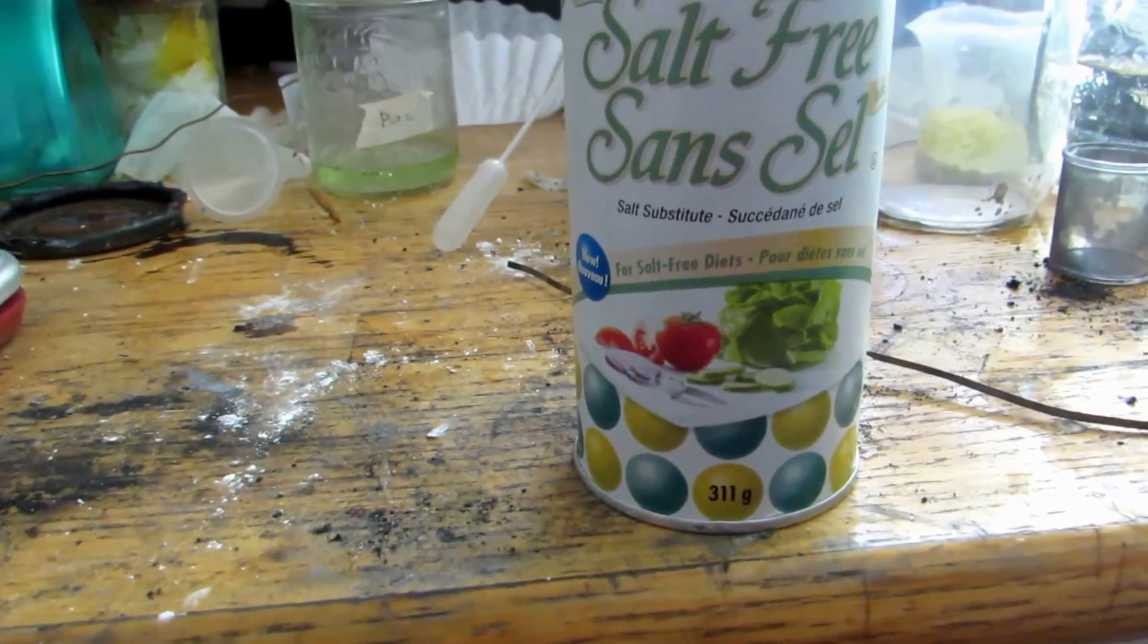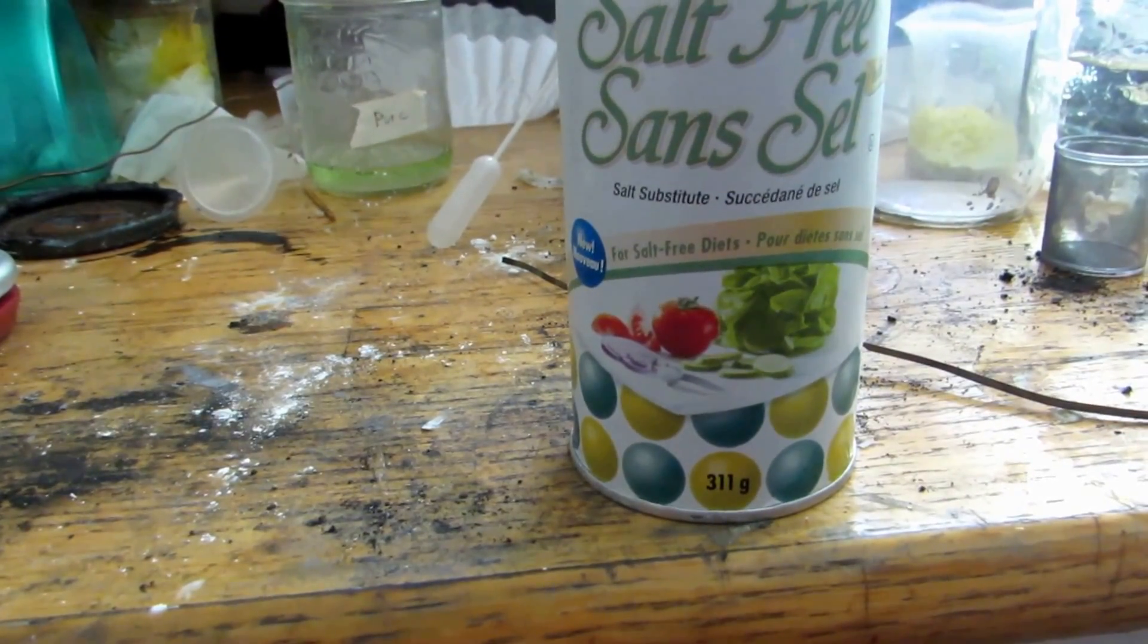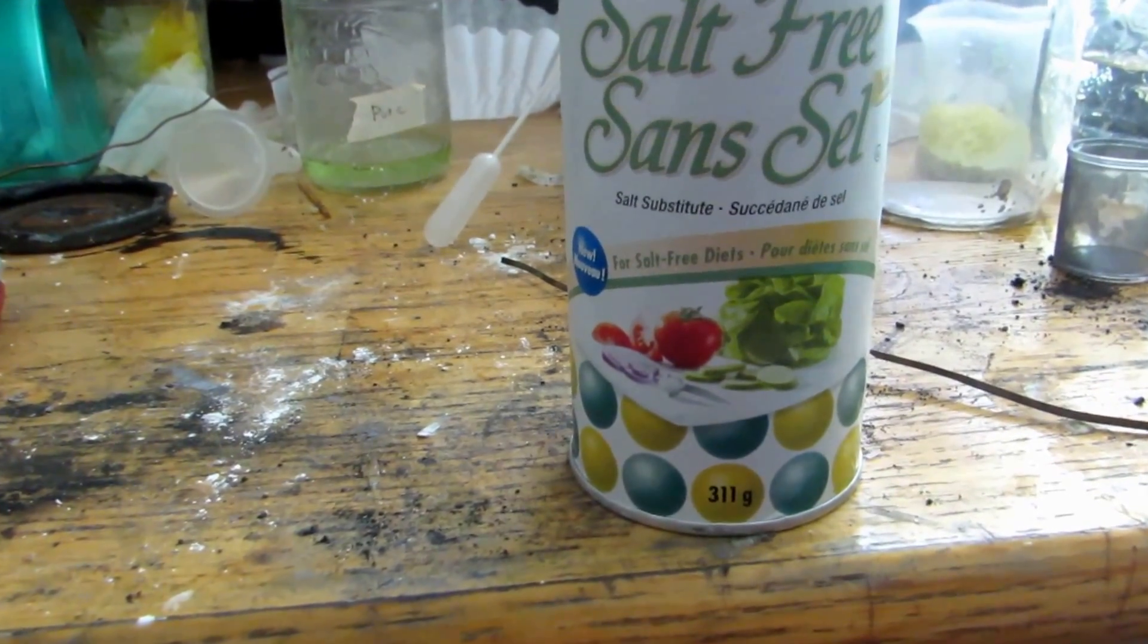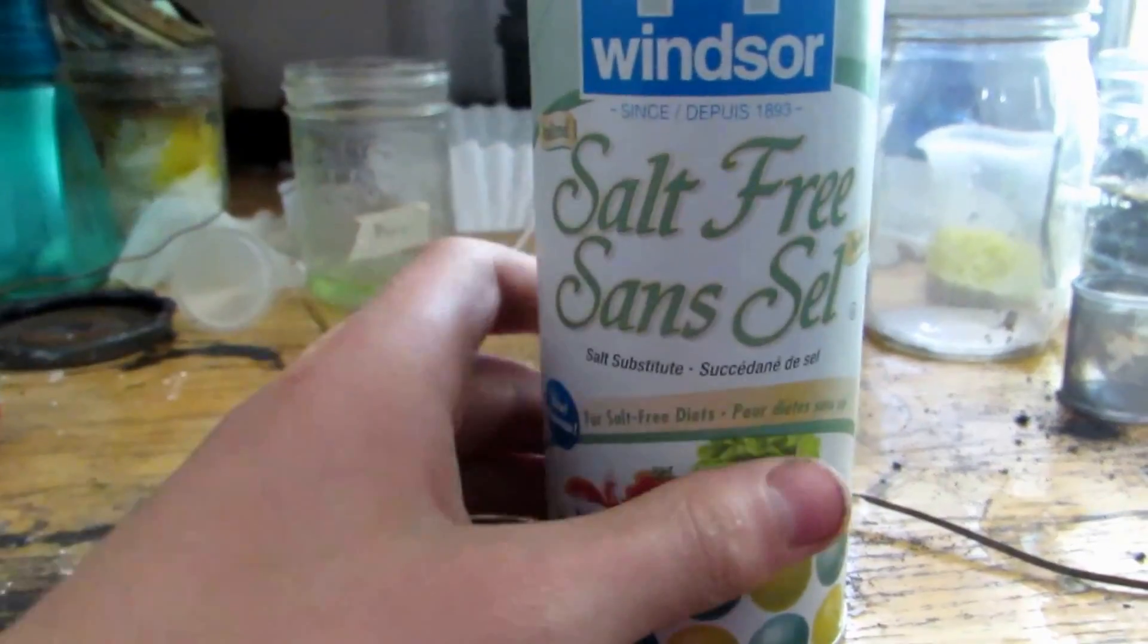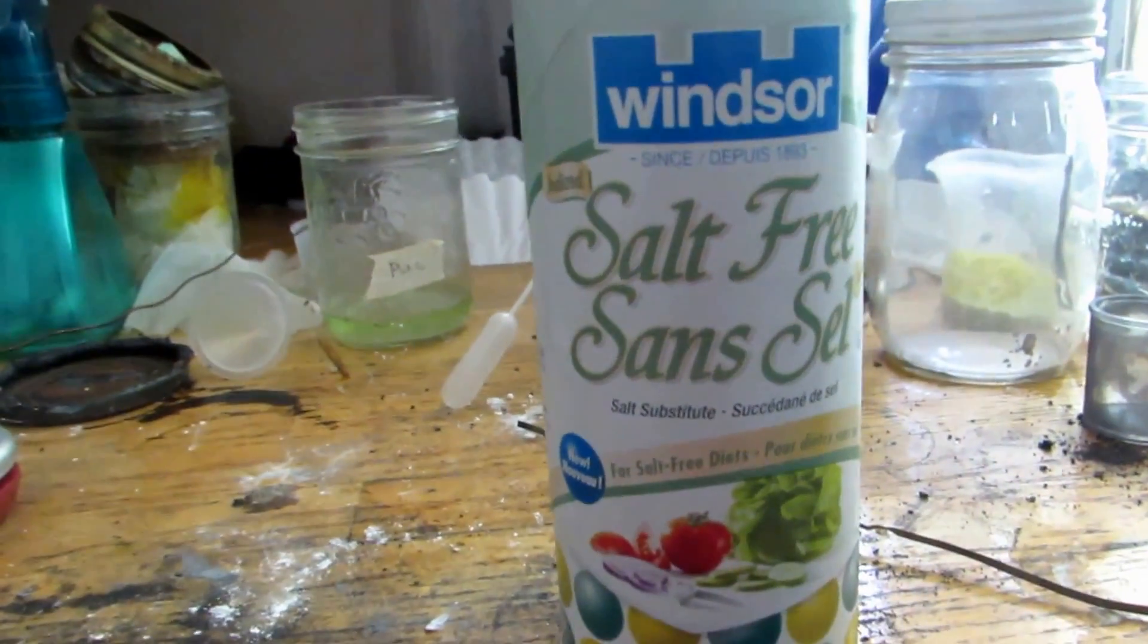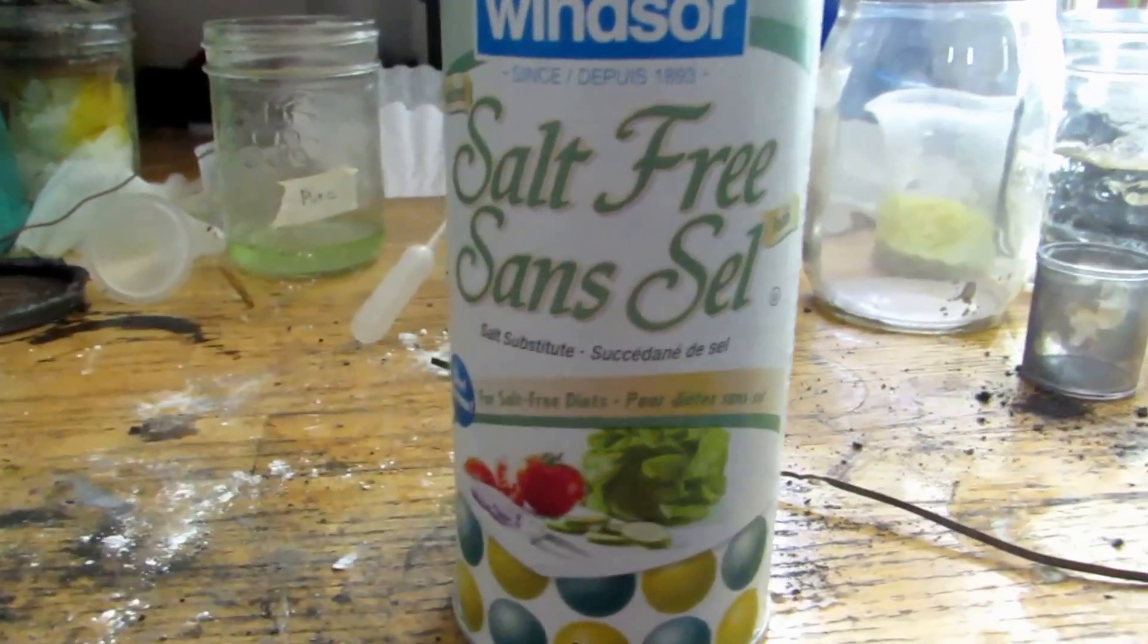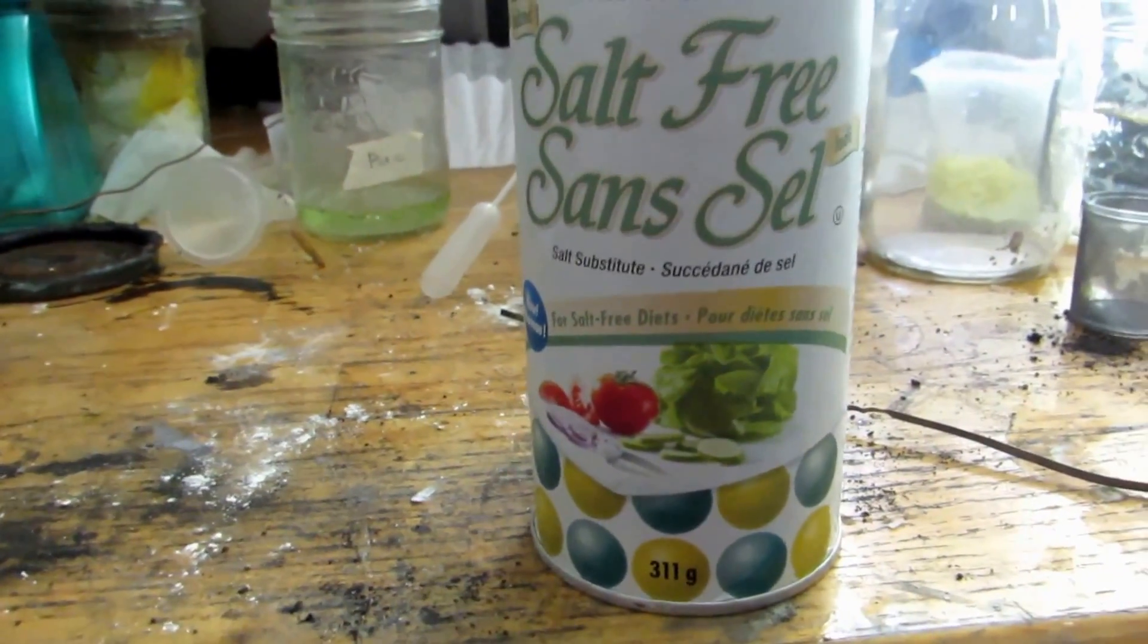So anyhow, what we actually need for the strontium chloride, how you can produce it through electrolysis, is potassium chloride. So here is potassium chloride. Now this is sold as salt free salt. So that just means there's no sodium chloride in it. It's potassium chloride instead.